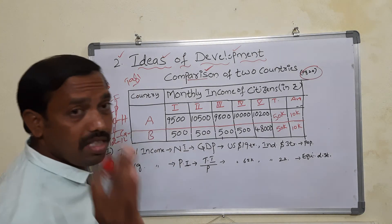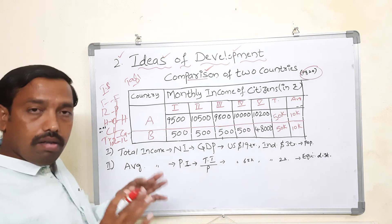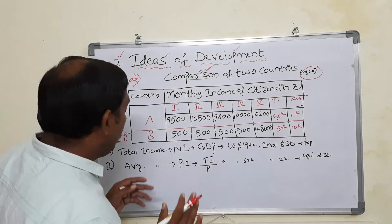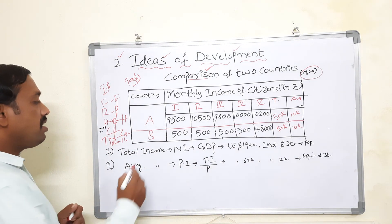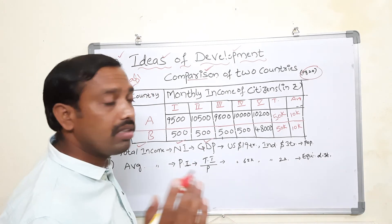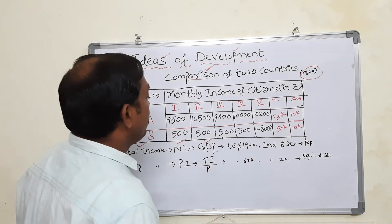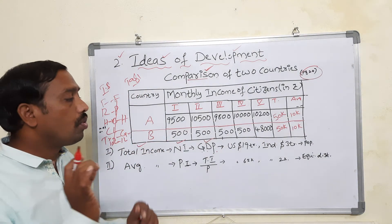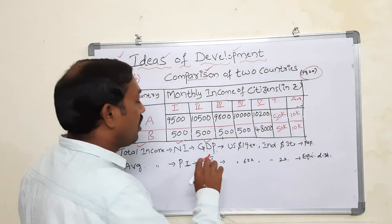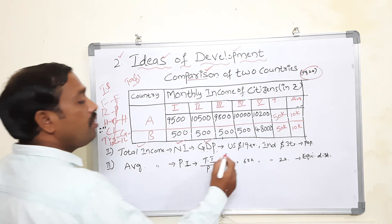In the same way, how can you say one country is a developed country and another is underdeveloped? There are majorly two criteria. Number one is the total income, also called national income or GDP — Gross Domestic Product. GDP is the total value of goods and services produced in a particular year within the country. So it is essentially the total income of the country.